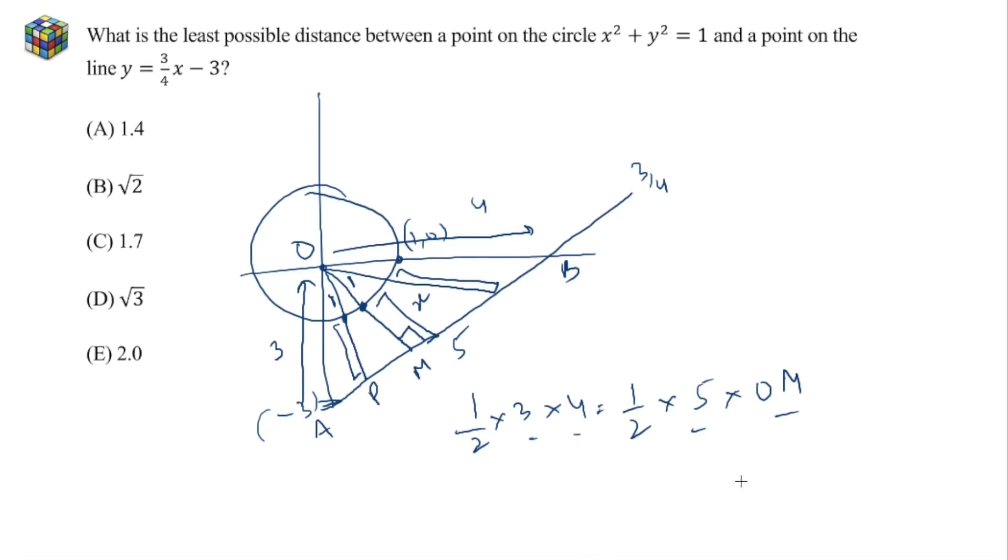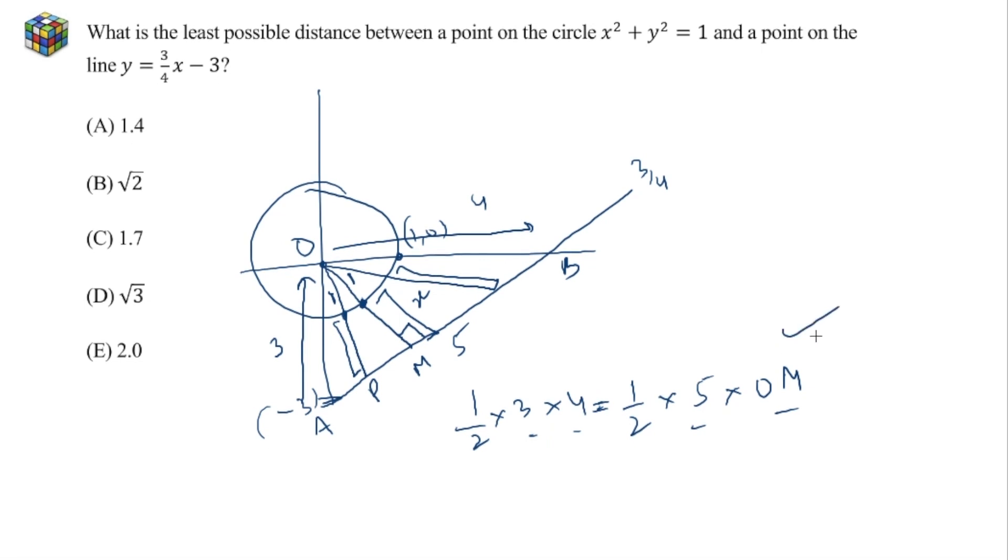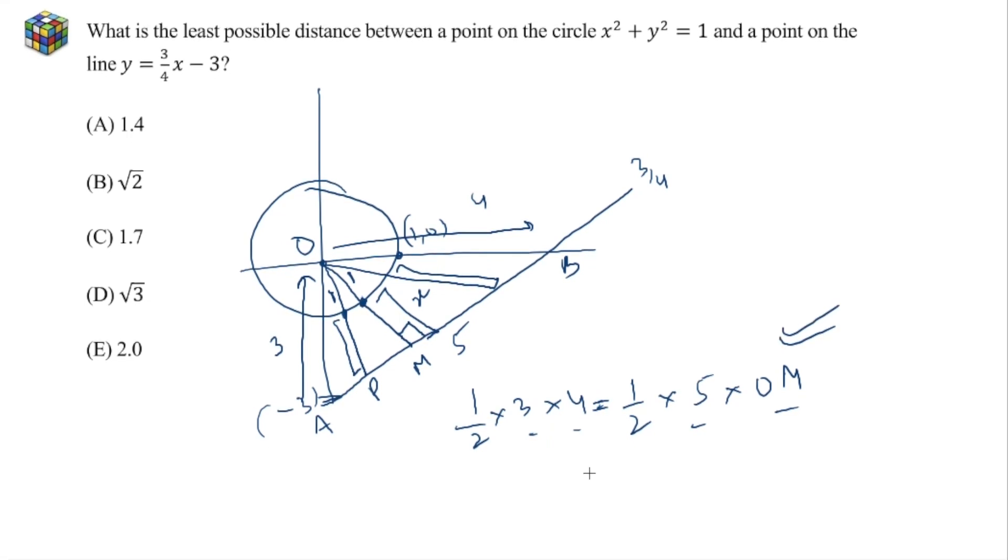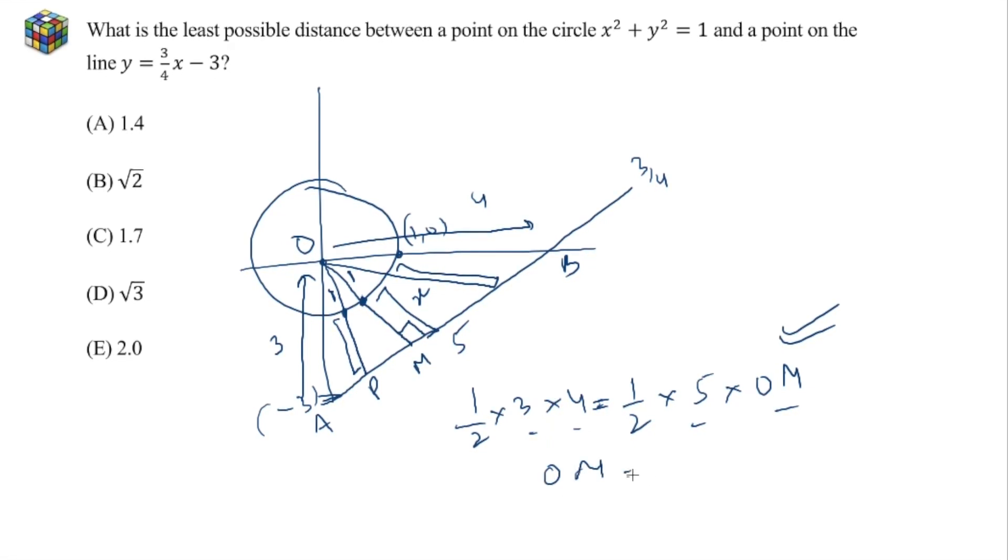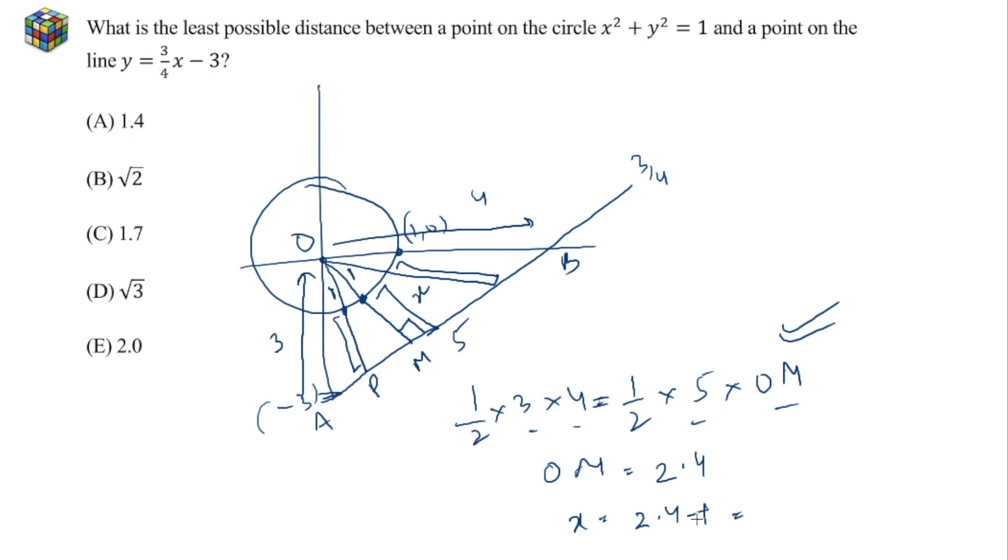Here these two are the legs but the area is the same, it is the same area of the same triangle. Keep this in mind for right triangles, comes in very handy. So, you get OM is equal to 2.4 here which gives you x is equal to 2.4 minus 1 which is equal to, you remove the radius, you get 1.4. Answer A.